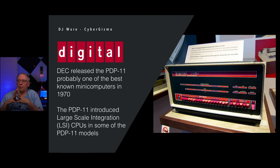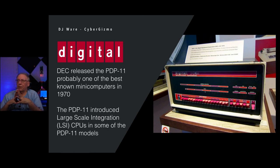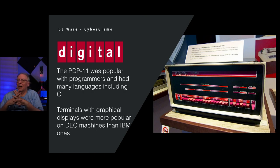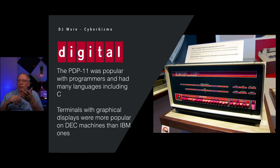The other one that came about was the PDP-11, probably the best known of DEC's minicomputers, arriving in 1970. Some models had integrated large-scale integration CPUs, but not all. I remember seeing a bunch of these around, all actively in use — nobody was just going to let you grab one and walk off with it. The PDP-11 was popular with programmers because the C language had been ported to it. You'd also see it running statistical programs like SPSS. Graphics terminals were more popular on DEC than IBM because IBM didn't really have one.